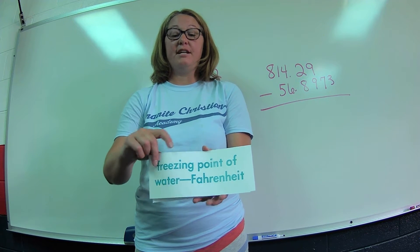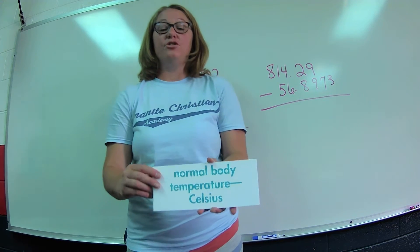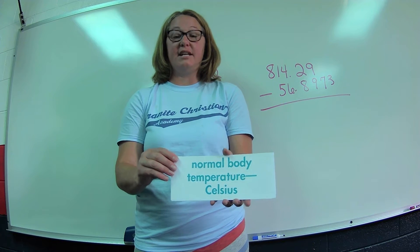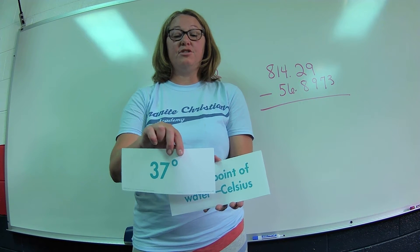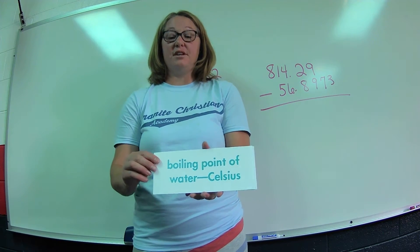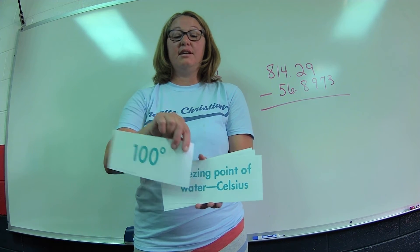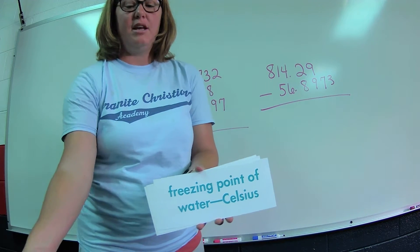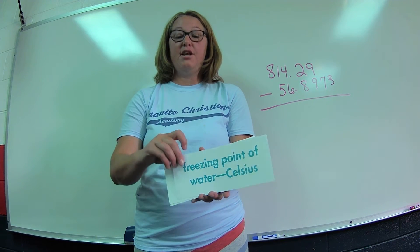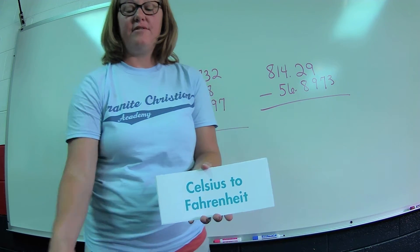Now let's do the normal body temperature in Celsius. In Fahrenheit it's 98.6, in Celsius it's 37 degrees. The boiling point of water is 212 degrees Fahrenheit but in Celsius it is 100 degrees. The freezing point is 32 degrees Fahrenheit but that's the same as zero degrees Celsius.